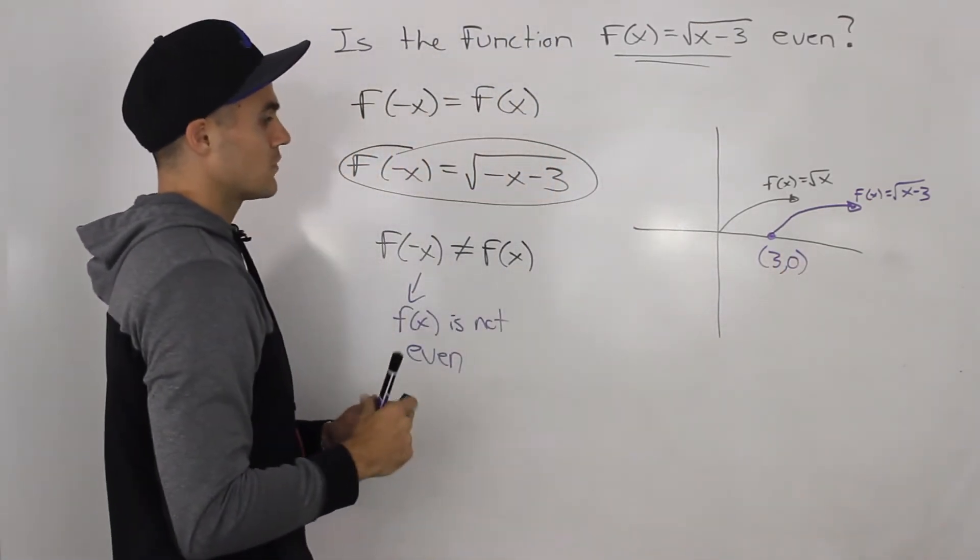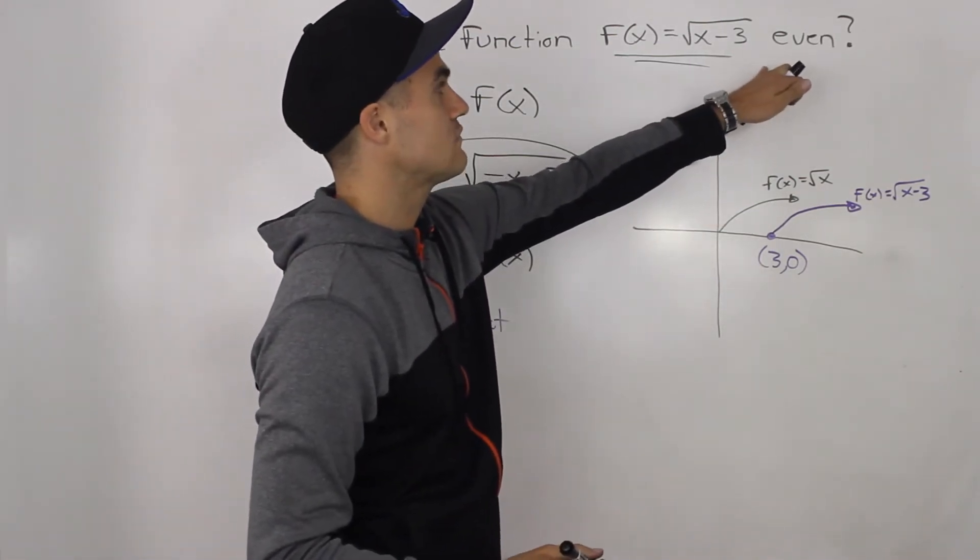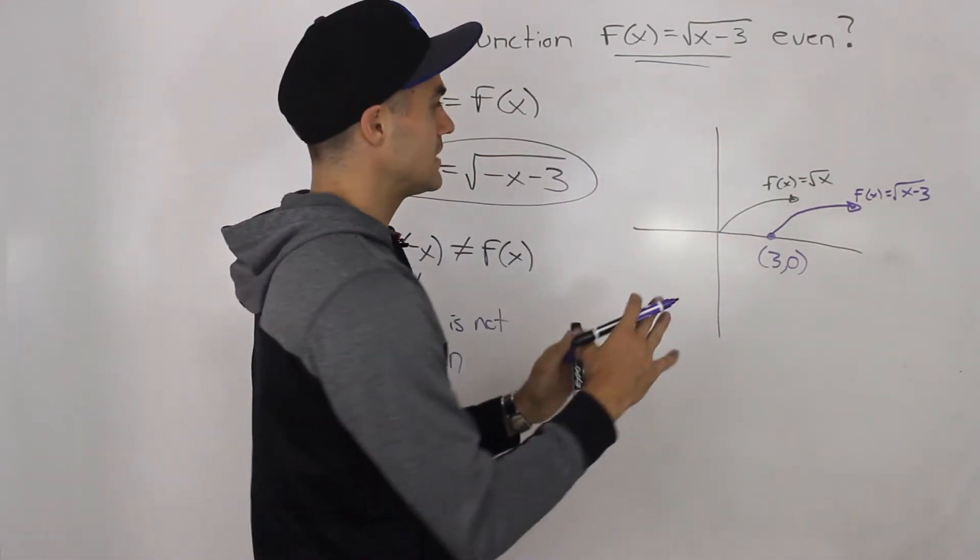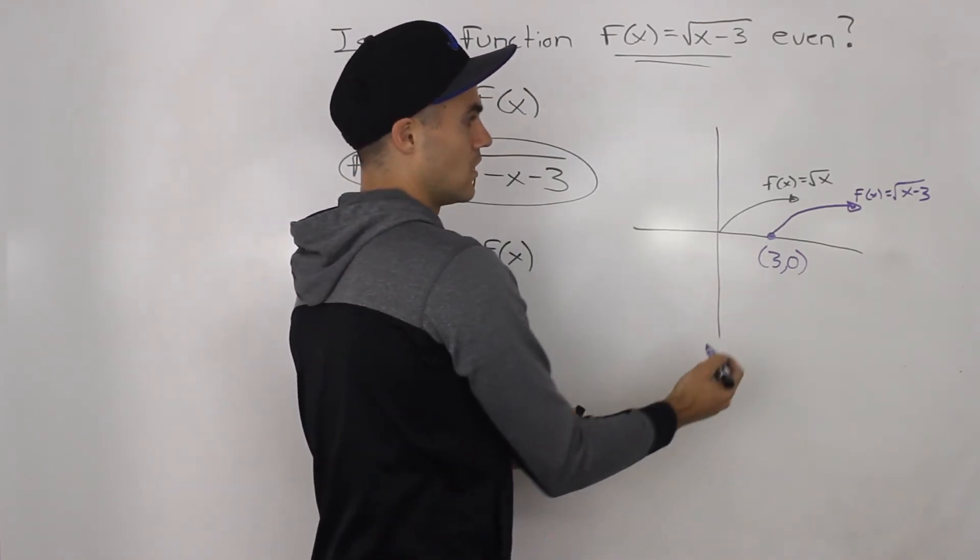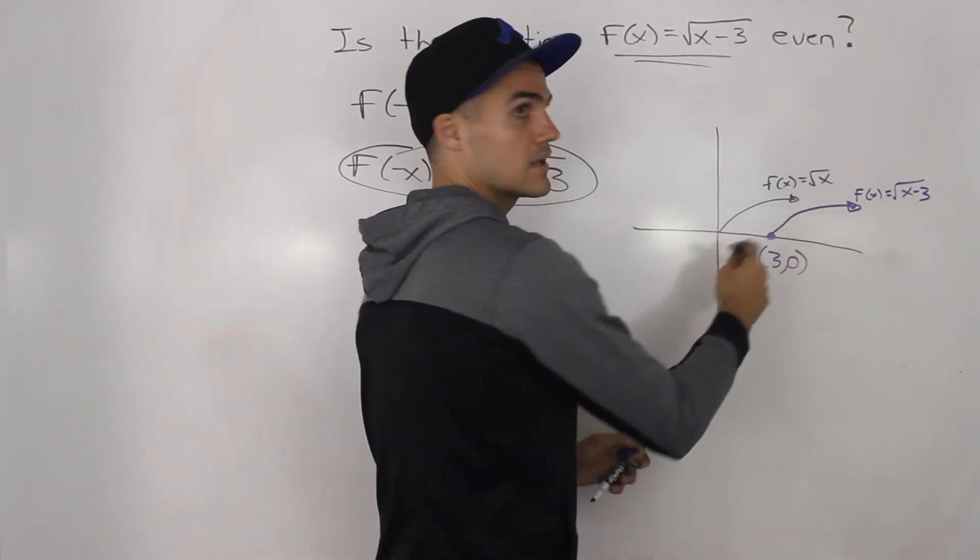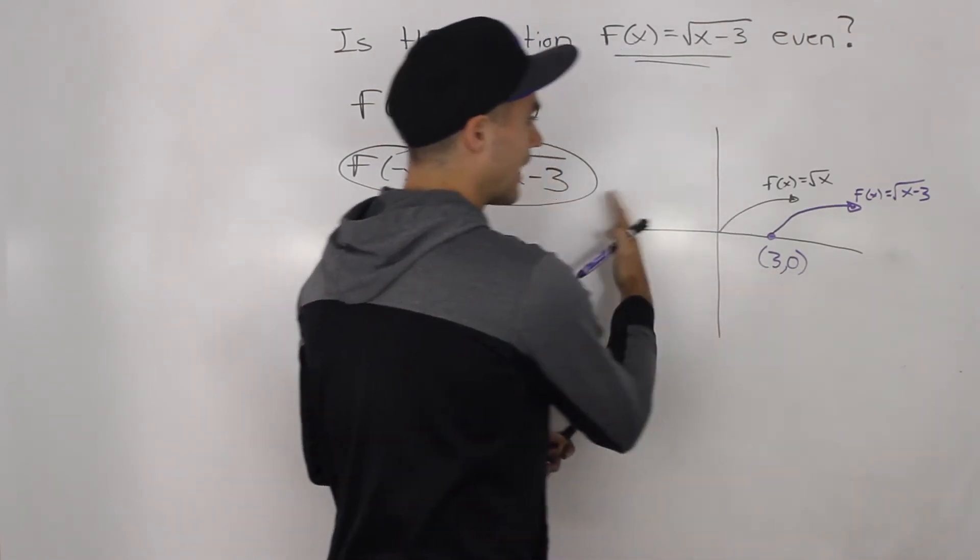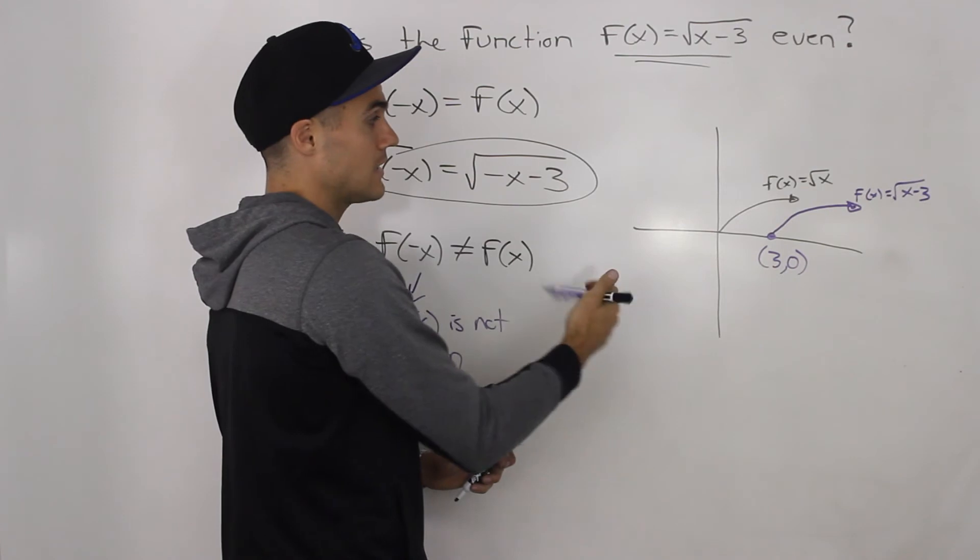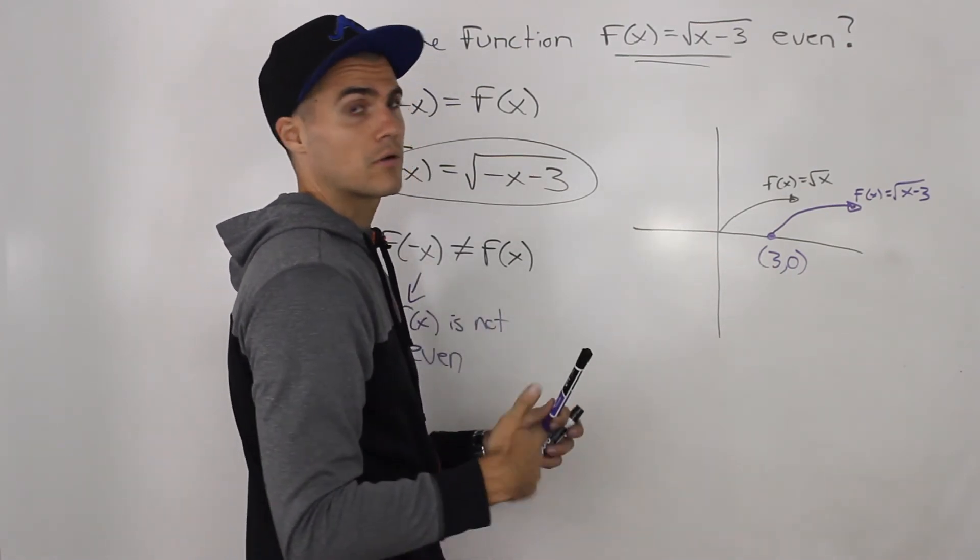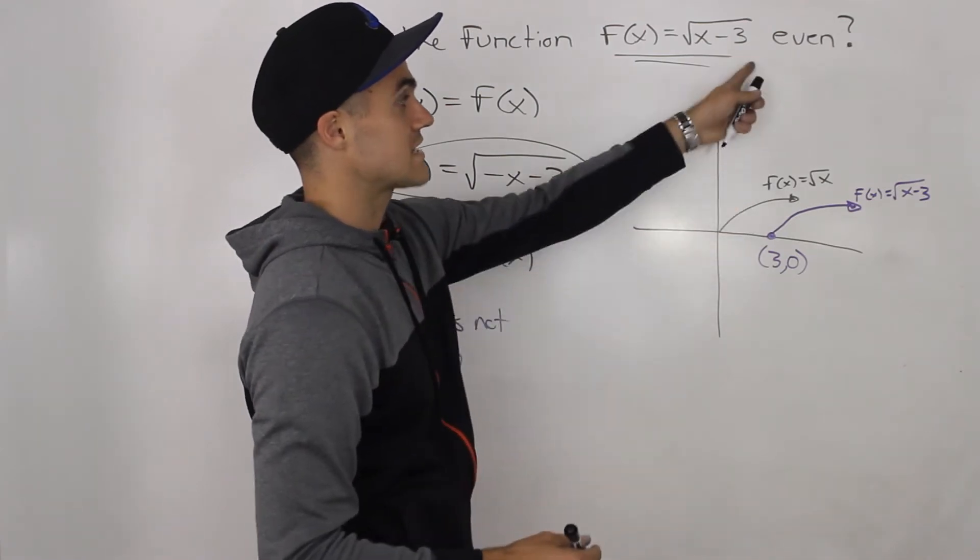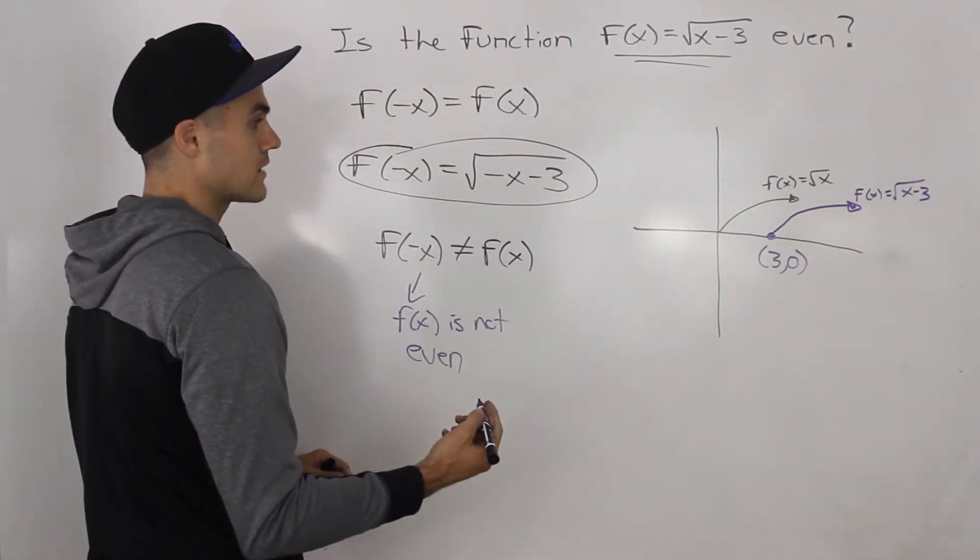Well, if you remember an even function, what does an even function mean graphically? It means it's symmetrical about the y-axis. Well, notice how this graph here is not symmetrical about the y-axis. There's actually nothing to the left of the y-axis anyways of the graph. So because it's not symmetrical about the y-axis, we say that it is not an even function.